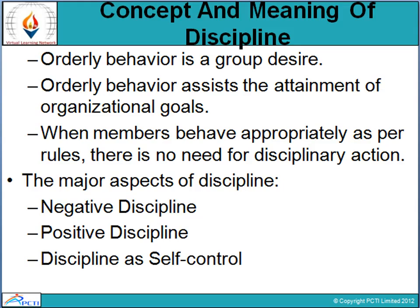The major aspects of discipline are: negative discipline, positive discipline, and discipline as self-control. Disciplines are often of three types. Negative discipline deals with situations where negativity arises — maintaining discipline through excessive supervision, punishments, suspension from the job, or any kind of negative effect to maintain that discipline. When negative discipline comes from management's side, it is obvious that employees are not satisfied and start feeling controlled, leading to dissatisfaction.